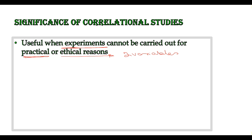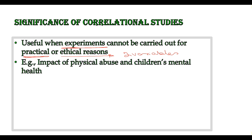For example, if one is doing research on the impact of physical abuse on children's mental health, an experimental approach would require introducing physical abuse as an intervention and then observing its effect on children's mental health. This is not ethically right. Therefore, in this situation, we turn to correlational studies rather than experimental studies.